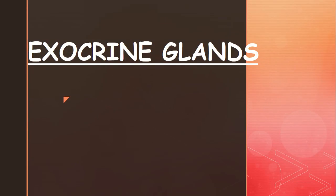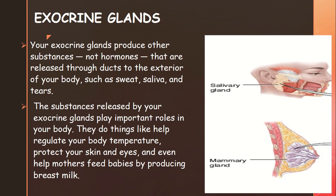Today's topic is exocrine glands. There are two types of glands: exocrine and endocrine glands. Exocrine glands produce substances — not hormones — that are released through ducts to the exterior of the body, such as sweat, saliva, and tears. The duct is like a small tube or channel through which these substances are released.